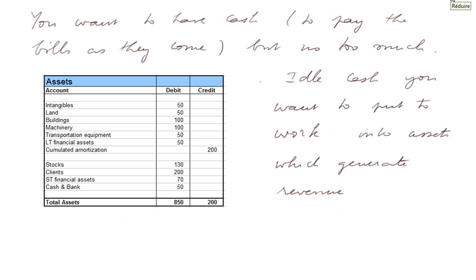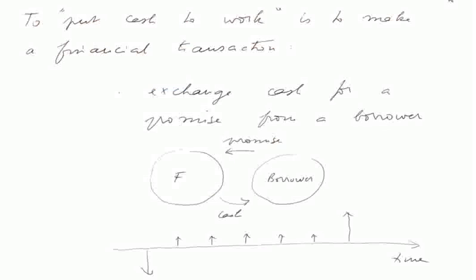You want to have cash in your firm — these are the assets of the firm to pay the bills as they come — but you don't want to have too much cash. Idle cash you want to put to work into assets that generate revenue, and there is a large choice of assets that generate revenue. To put cash to work is to make a financial transaction, that is exchange cash for a promise from the borrower.